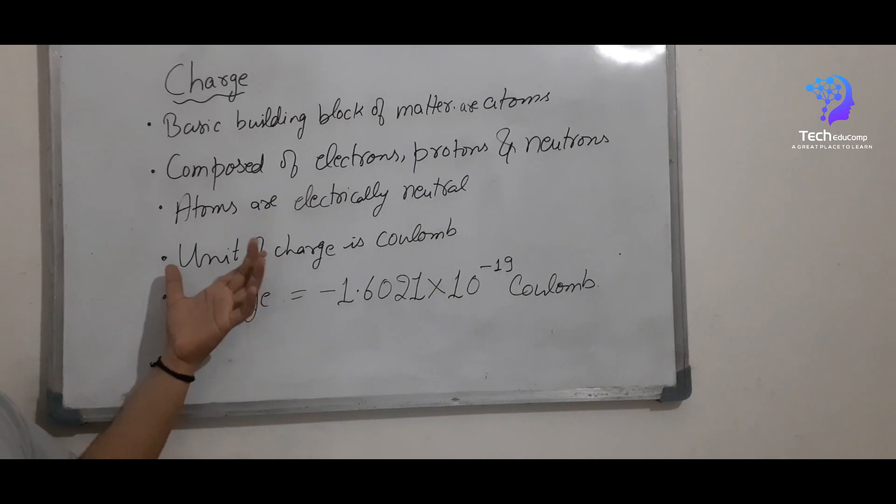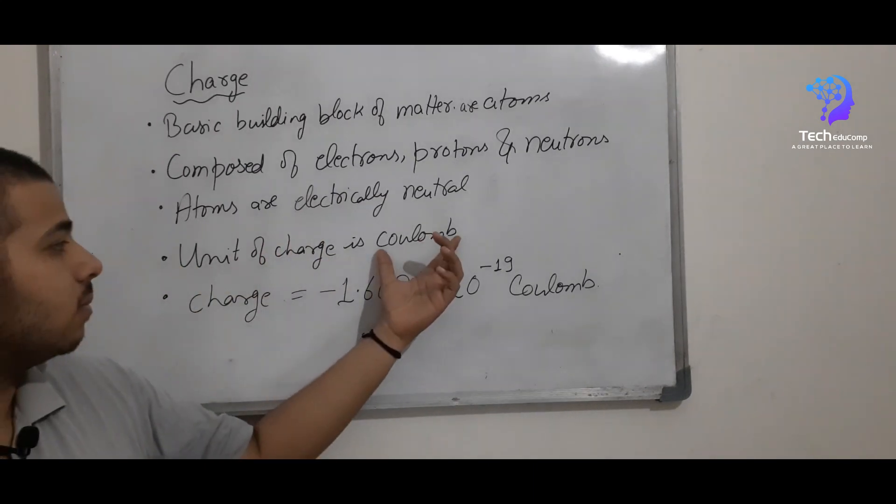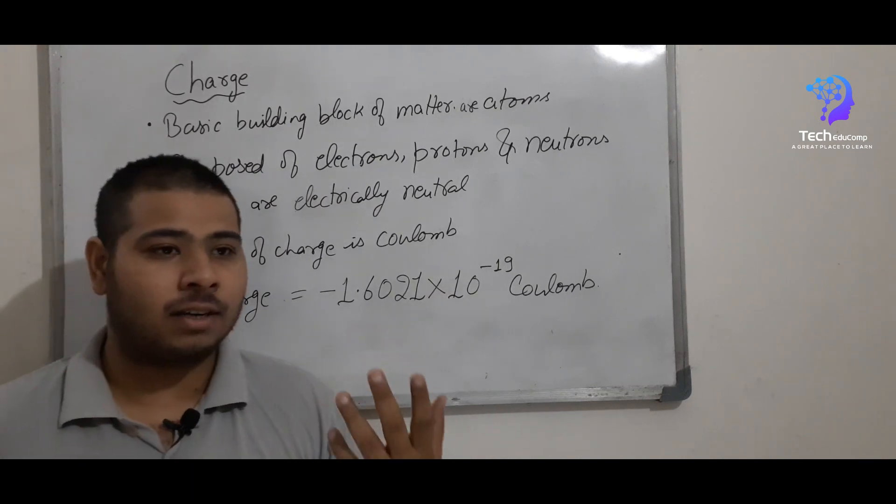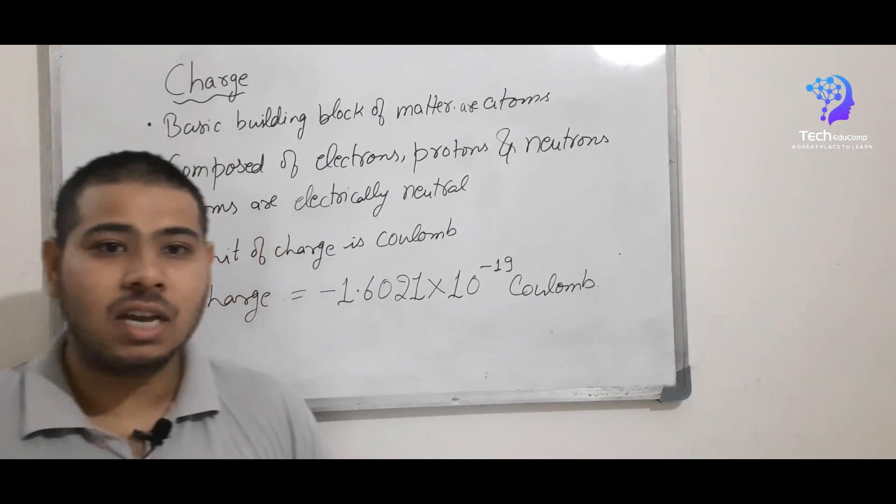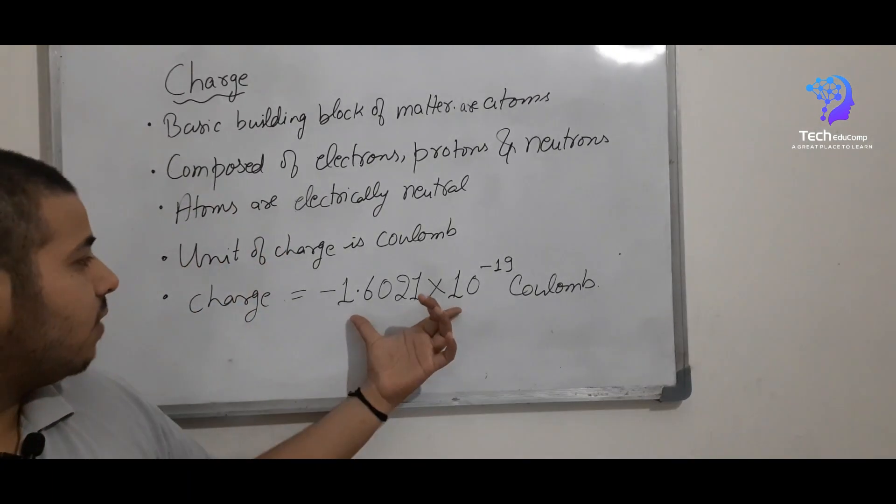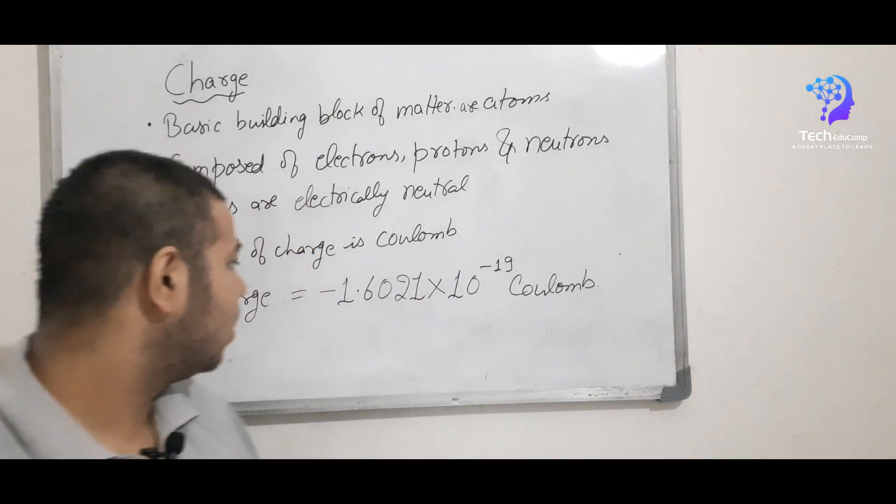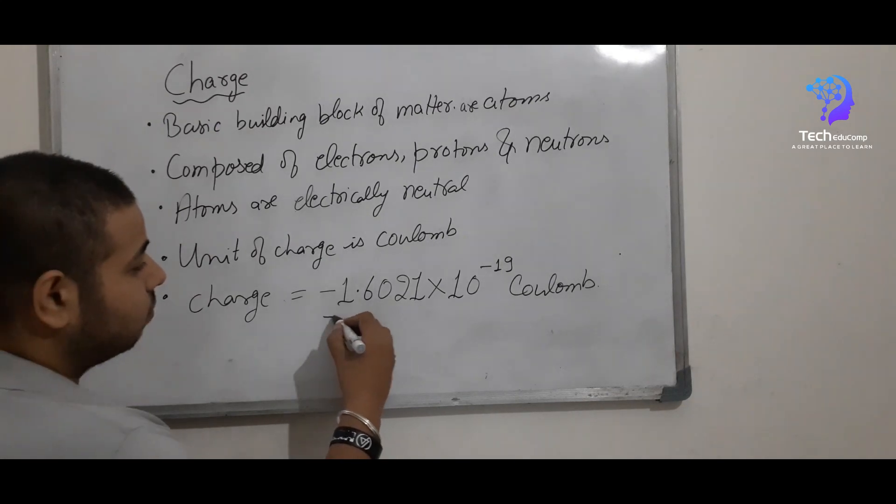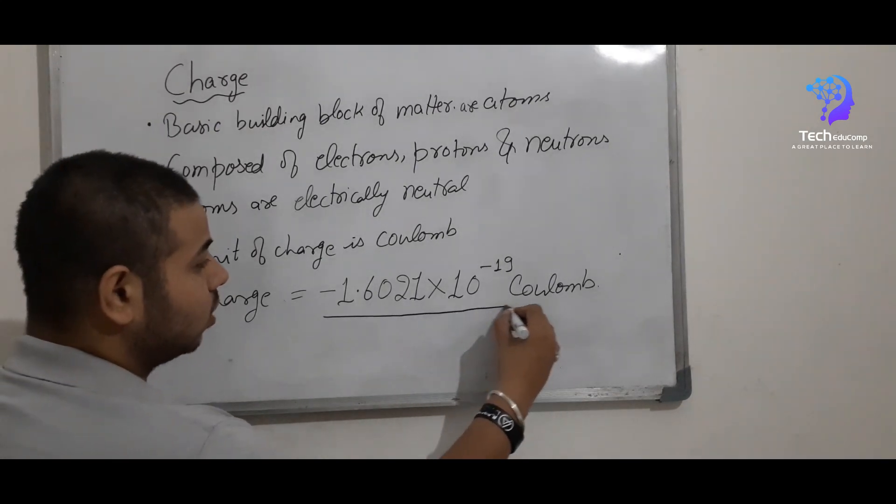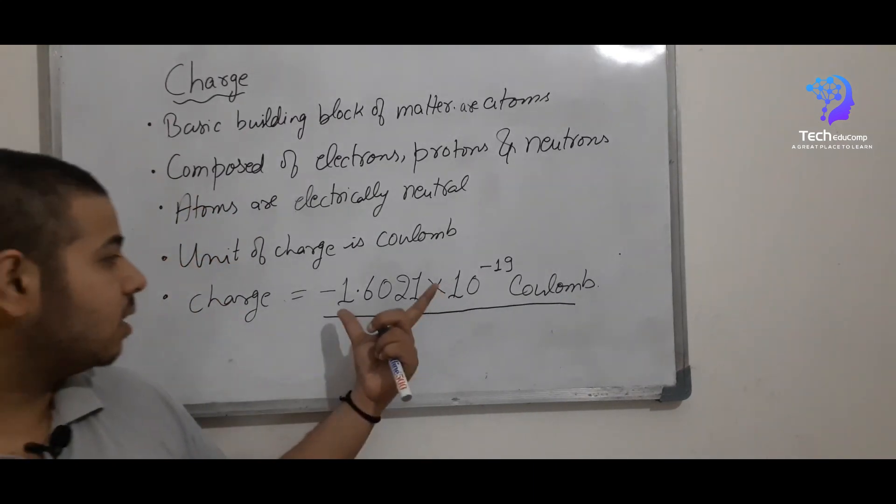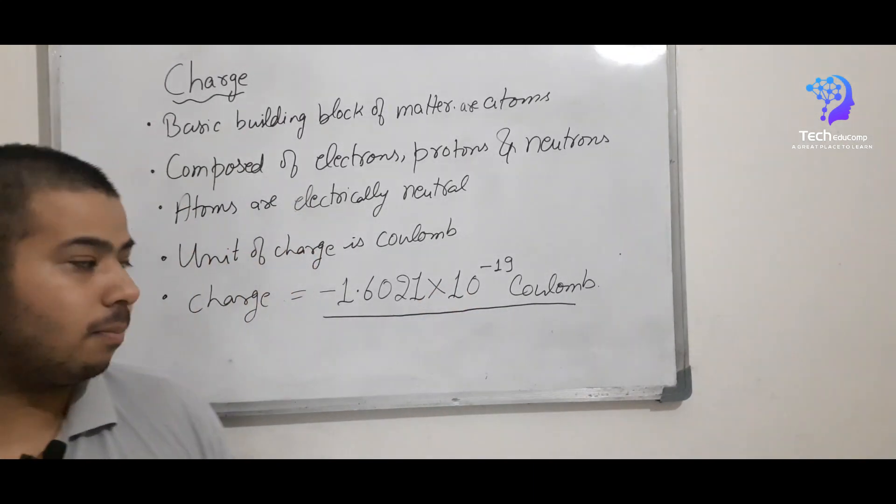And with this we know the unit of charge is coulomb. And this is its value. We can calculate in coming lectures we will see. We will be using this value of the charge when we are using that formula. So it is minus 1.60212 times 10 to the power minus 19 coulomb. This is the value of one coulomb.